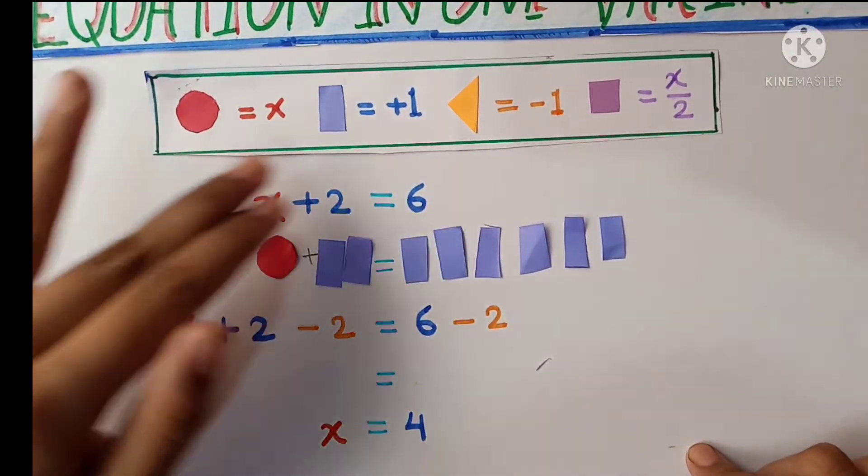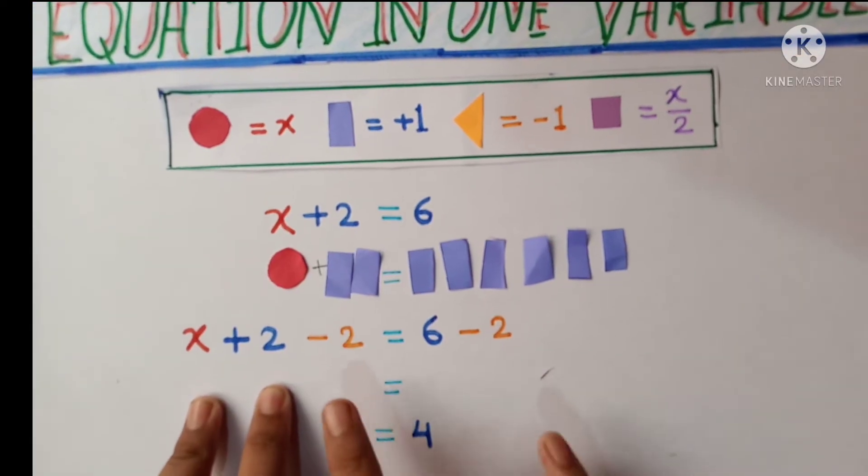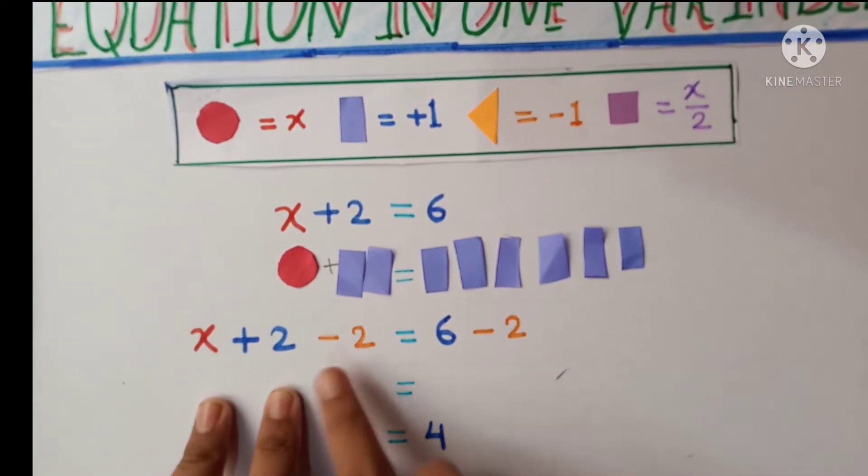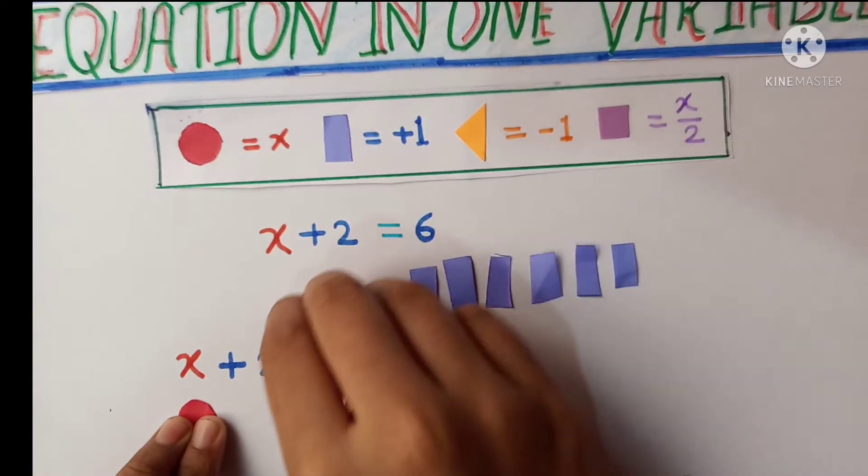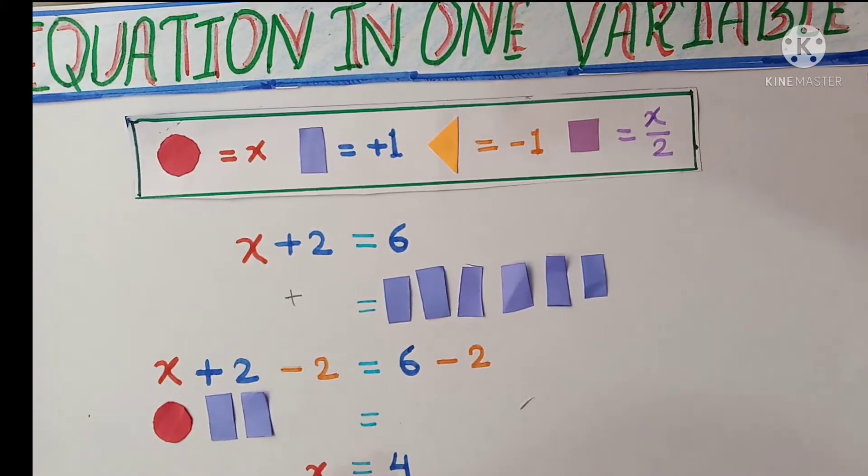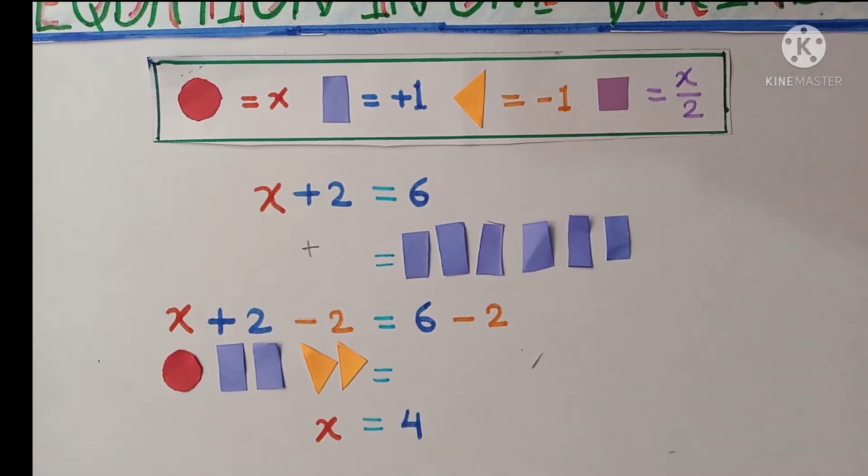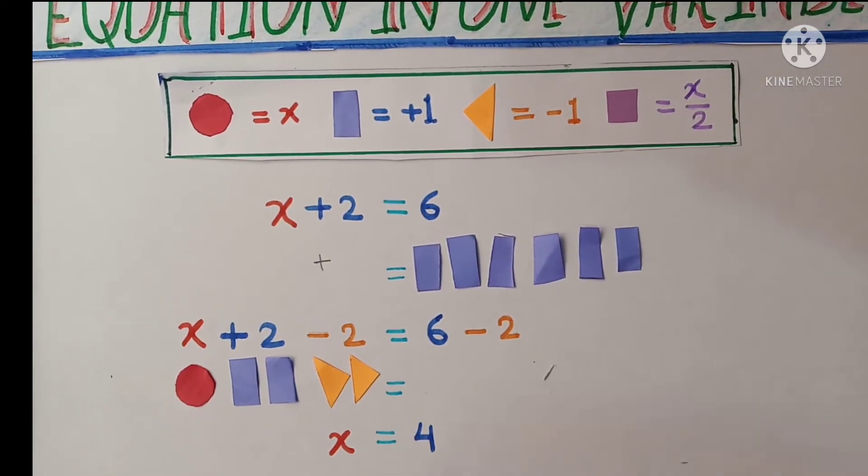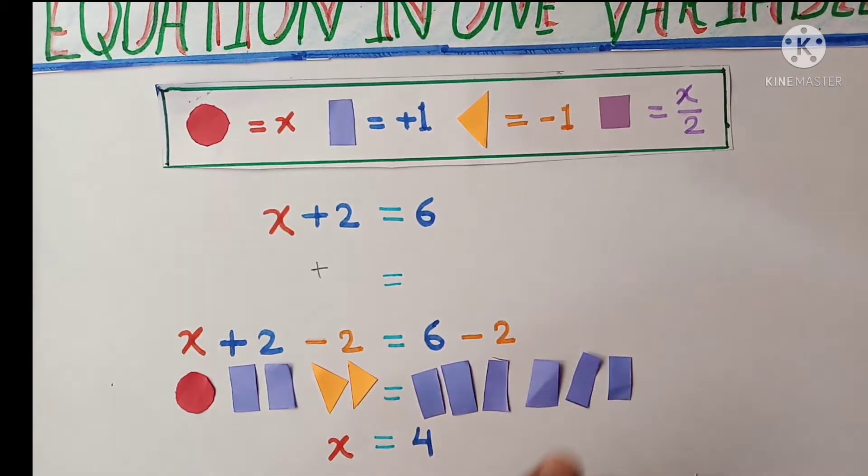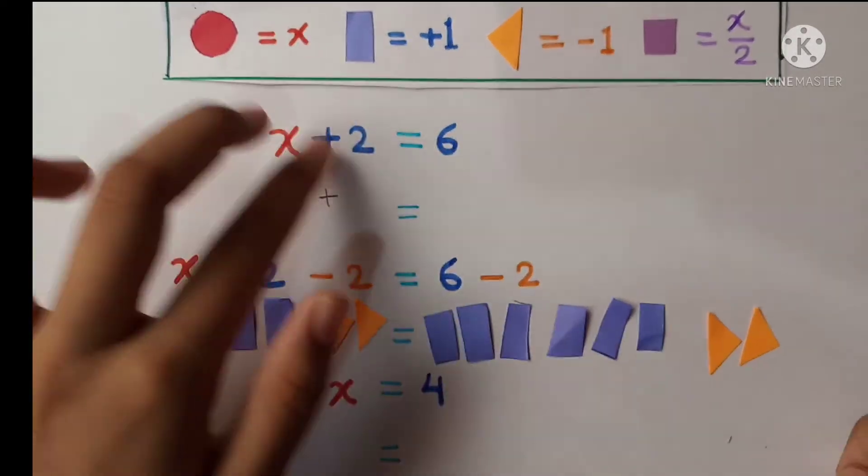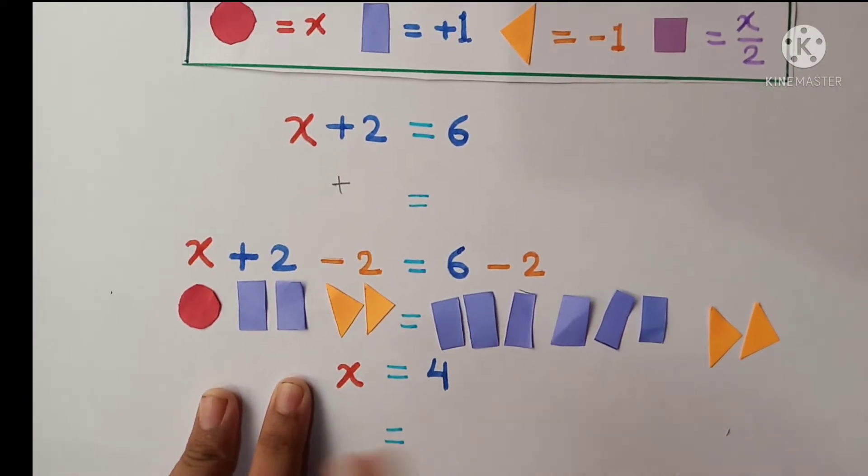What we have to do here, the same x plus 2 is equal to 6, and opposite of plus 2 we have to take minus 2. So on both sides LHS and RHS we have to take minus 2. So the same thing we will take here and we have to do minus 2 for solving the equation. Let's take here, I took minus 2 and more 6. This as it is we will take here and minus 2. So here all is as it is, x plus 2, and on both sides I have put minus 2 on LHS and RHS.